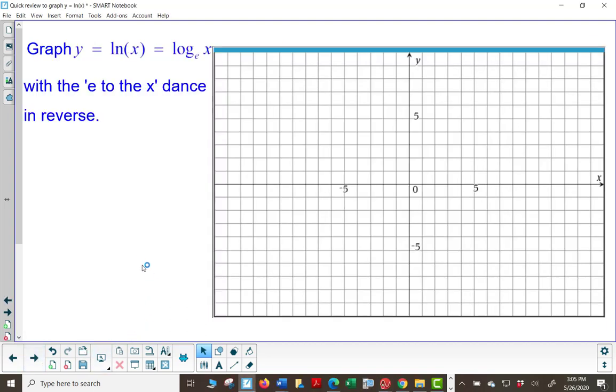To graph y equals natural log of x, we're going to use the e to the x dance in reverse. The reason for that is you might recall that the natural log and the e functions are inverses of each other.